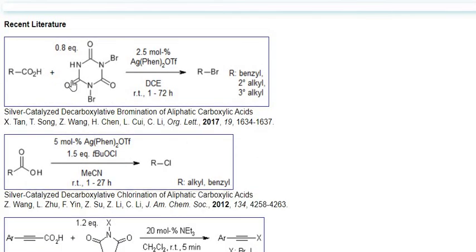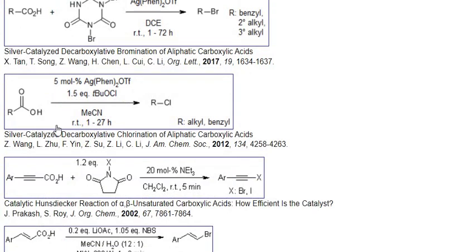Now in recent literature, you can see if you have carboxylic acid with this triazine compound, you will get R-Br. Similarly, if you have carboxylic acid under different reaction conditions, you will get alkyl halides. In 2012 and in 2017, these papers were published. Now in 2022, you can see some modifications were done for the formation of alkyl bromides.